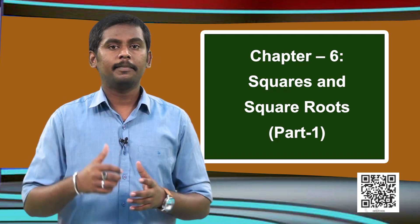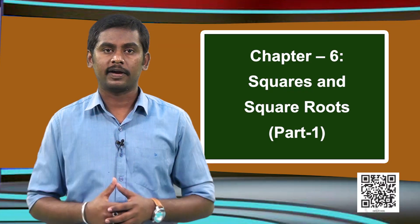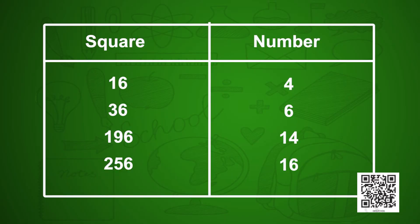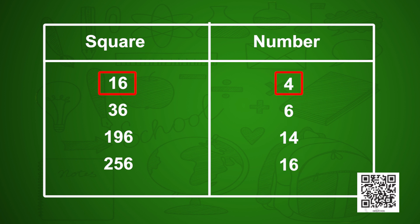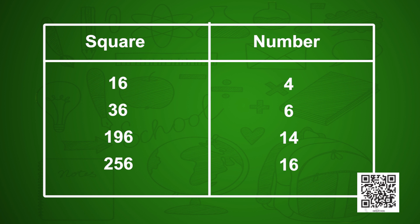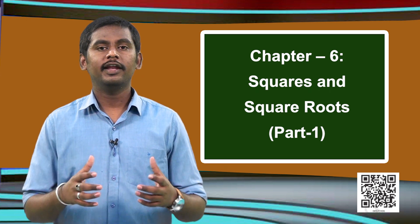Now observe another table. The numbers 4, 6, 14, 16 all end with either 4 or 6 in their units place. The square of 4 is 16, the square of 6 is 36, the square of 14 is 196, the square of 16 is 256. We can see that whenever a square number ends with 6, the original number will have either 4 or 6 in its units place. By now we have seen 3 properties.